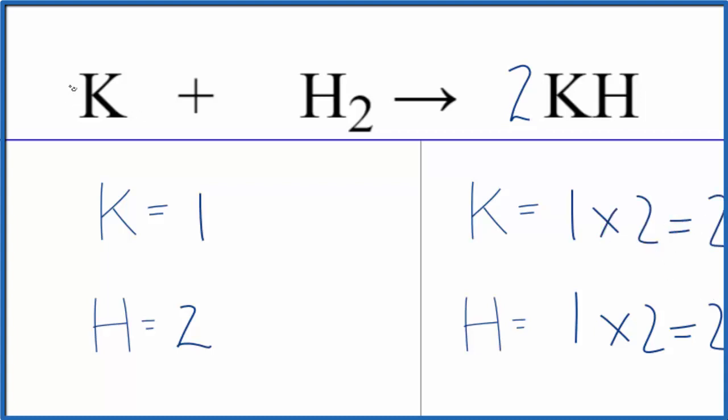That's pretty easy to fix. We could put a coefficient of two in front of the potassium. One times two, that would give us two potassium atoms.